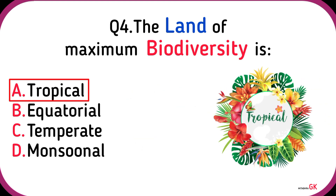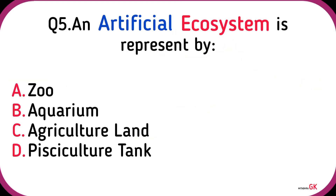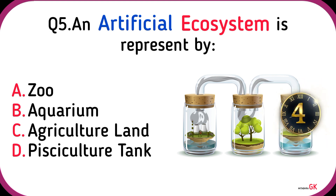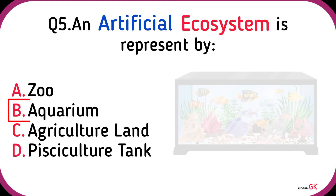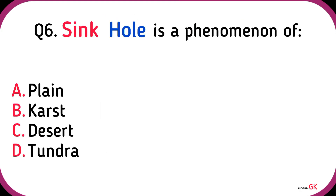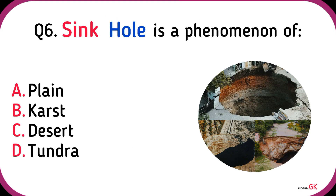The land of maximum biodiversity is tropical. An artificial ecosystem is represented by an aquarium. Sinkhole is a phenomenon of karst.